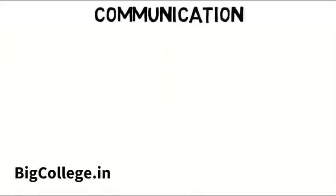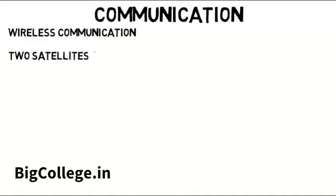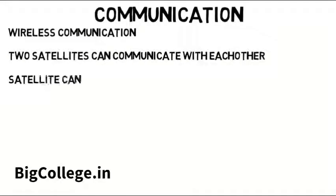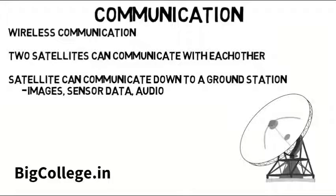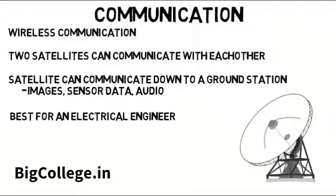Lastly, communications is about wireless communication so that maybe two satellites can communicate with each other, or a satellite can communicate down to a ground station to provide information, whether it be images, sensor data, or audio from someone talking. Communications is included because at some schools aerospace students may learn some of it, but usually in the real world this would be best for an electrical engineer or similar discipline.